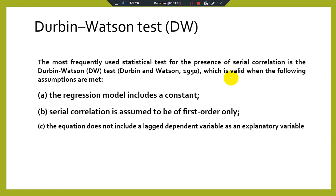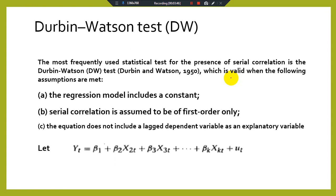Third, the equation must not include a lagged dependent variable as an explanatory variable. Sometimes we use the lag of the dependent variable as an explanatory variable to find its lagged impact. When we include a lagged dependent variable as an explanatory variable, we cannot apply the DW test. The model is: Y_T = β₁ + β₂X₂T + β₃X₃T + ... + βₖXₖT + U_T.